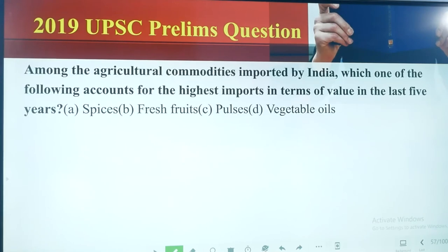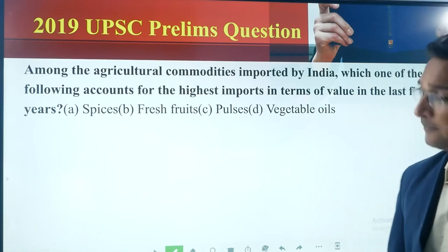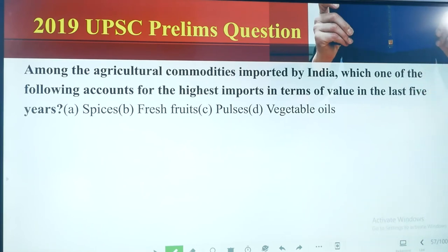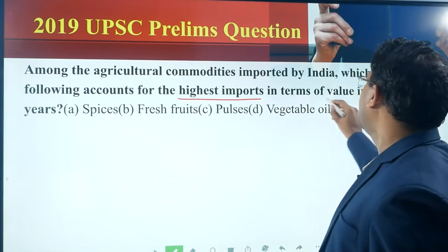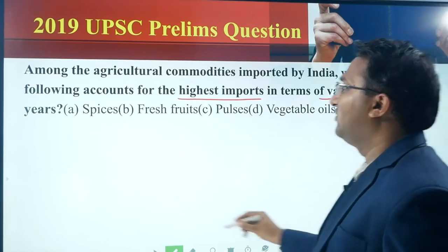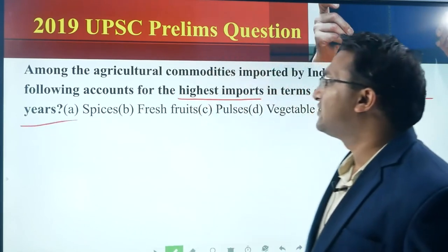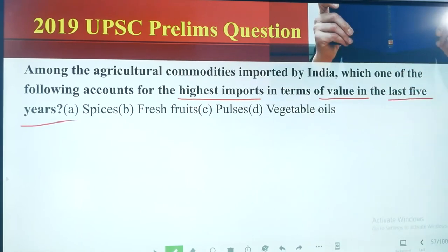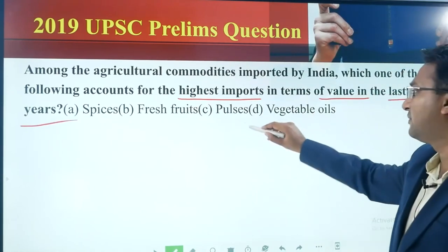Next question — this is a little bit outside this session directly, but I am discussing it as additional information. This question appeared in 2019 prelims. Among the agricultural commodities imported by India, which one accounts for the highest import in terms of value? A, spices; B, fresh fruit; C, pulses; D, vegetable oil. The answer is D: vegetable oil.